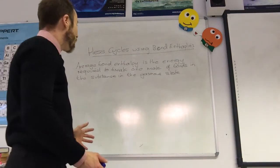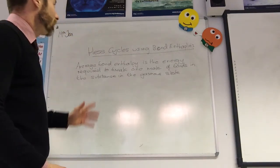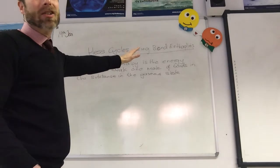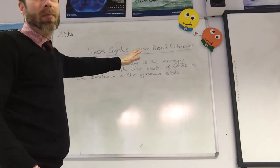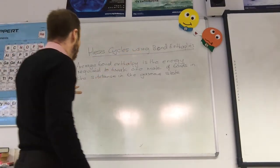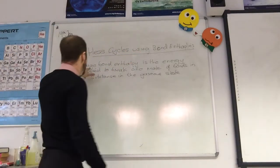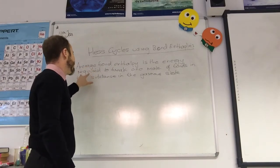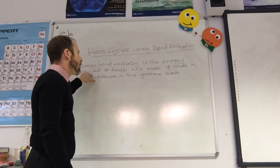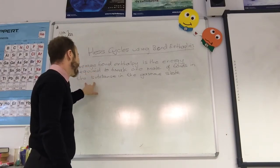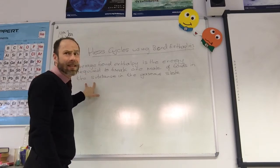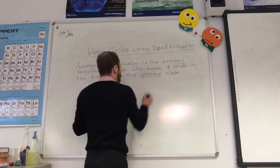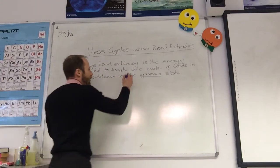So our final Hess cycle, we're going to use bond enthalpy. These are the energy from bonds. What is bond enthalpy? Average bond enthalpy is the energy required to break one mole of bonds in the substance in the gaseous state. You need to know that definition.